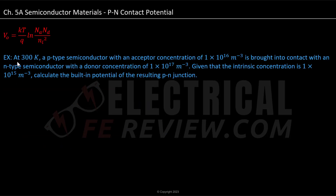For our example: at a temperature of 300 Kelvin, a P-type semiconductor with an acceptor concentration of 1 × 10¹⁶ m⁻³ is brought into contact with an N-type semiconductor with a donor concentration of 1 × 10¹⁷ m⁻³. Given that the intrinsic concentration is 1 × 10¹⁵ m⁻³, calculate the built-in potential of the resulting PN junction.